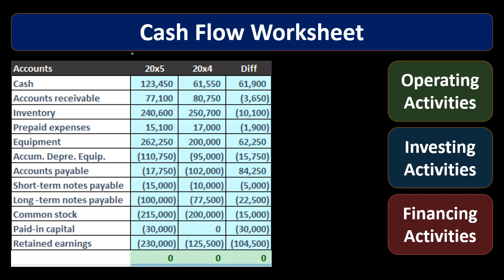What we will typically do is take our balance sheet and put it into a worksheet. This worksheet is more of a trial balance type — it looks like a post-closing trial balance for two periods. Debits are positive, credits are negative, so debits minus credits equals zero. That means debits equal credits for each year, and if we take the difference between the two, the change will also equal zero.